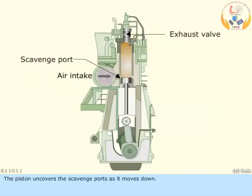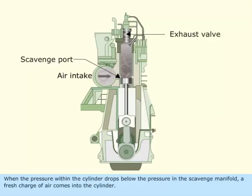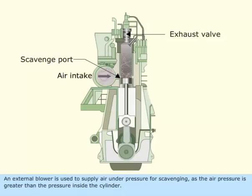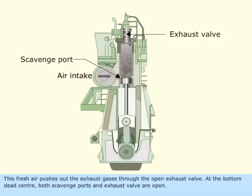The piston uncovers the scavenge ports as it moves down. When the pressure within the cylinder drops below the pressure in the scavenge manifold, a fresh charge of air comes into the cylinder. An external blower is used to supply air under pressure for scavenging, as the air pressure is greater than the pressure inside the cylinder. This fresh air pushes out the exhaust gases through the open exhaust valve.